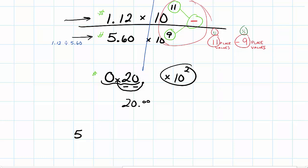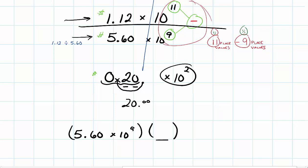Here's our $2 bill example. If I have 5.60 times 10 to the 9th, I'd have to multiply it by what in order to get it to the size of 1.12 times 10 to the 11th? This is where we stick that 20. We would multiply 5.60 times 10 to the 9th times 20, and that now is the same size as 1.12 times 10 to the 11th.